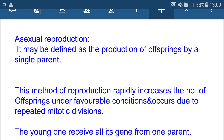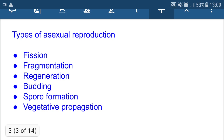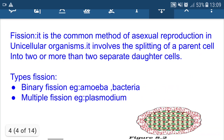In asexual reproduction, the young one receives all its genes from the parent. Types of asexual reproduction include: fission, fragmentation, regeneration, budding, spore formation, and vegetative propagation. Fission is the common method of asexual reproduction in unicellular organisms — one cell divides to form two or more daughter organisms. In binary fission, one cell divides into two daughter organisms. Examples include amoeba and bacteria.